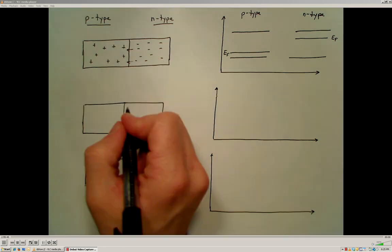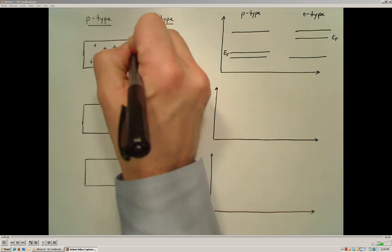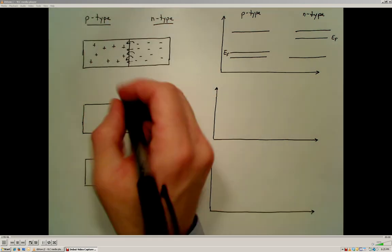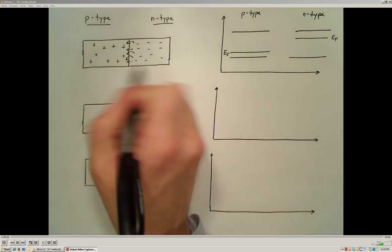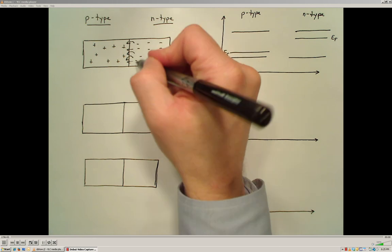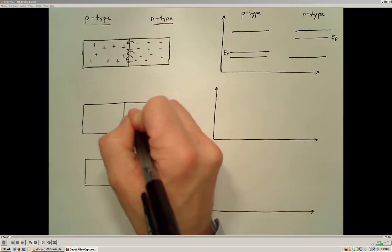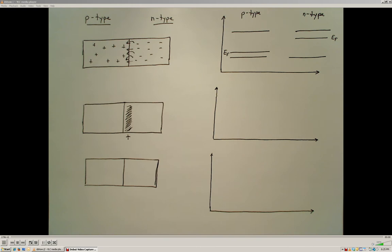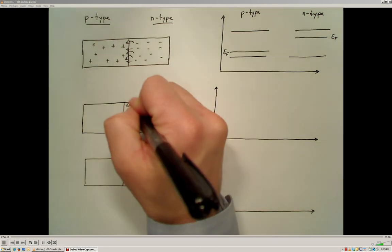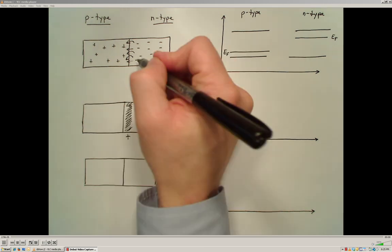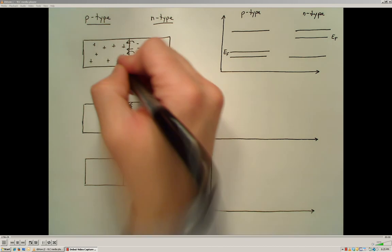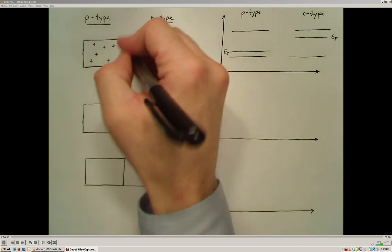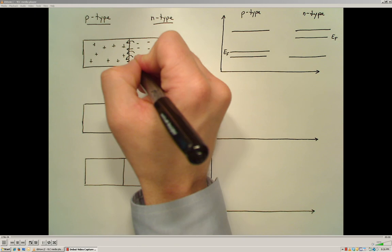As that process continues and electrons move over to fill holes on the p-type side, we took a neutral n-type material and by removing electrons from it, we actually accumulate a positive charge in the region close to the junction. This positive charge represents the net motion of electrons to the p-type side. Similarly, in the region around the junction on the p-type side, we're going to have a net negative charge because we've taken electrons from the n-type and added them to the p-type side.